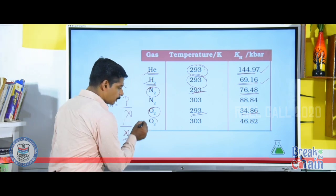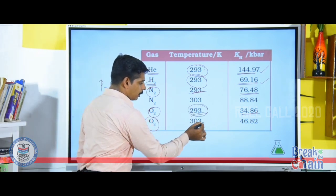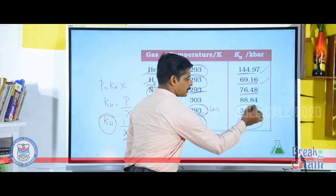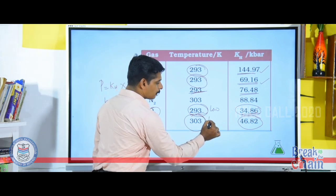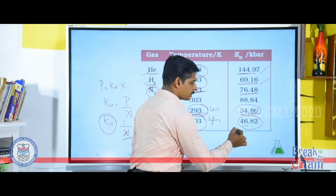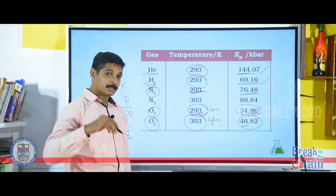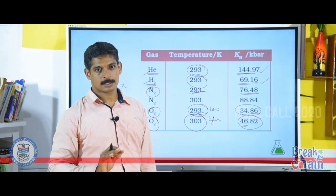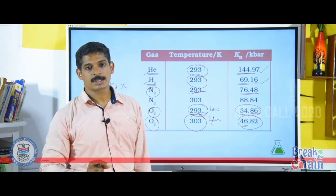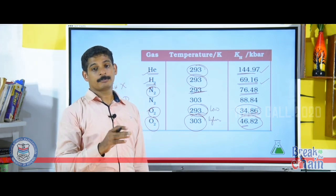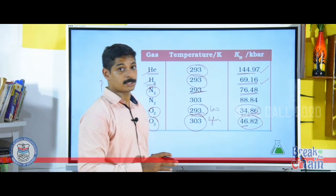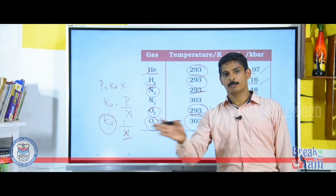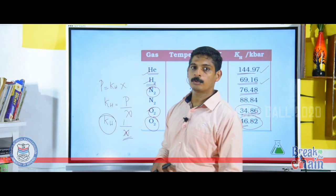Temperature also affects gas solubility. For oxygen: at 293 K, K_H is lower (around 34), and at 303 K, K_H is 46.82 — a higher value — indicating that as temperature increases, solubility of gas decreases. This explains the seasonal migration of fish: they prefer cold regions where more oxygen is dissolved in water, since warm water holds less dissolved oxygen.